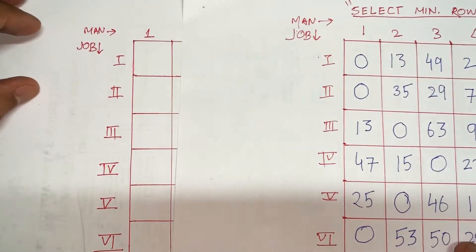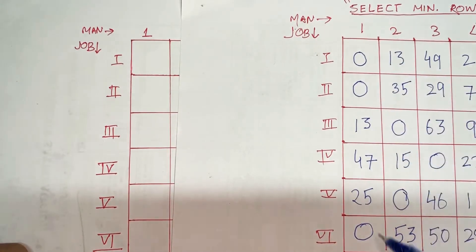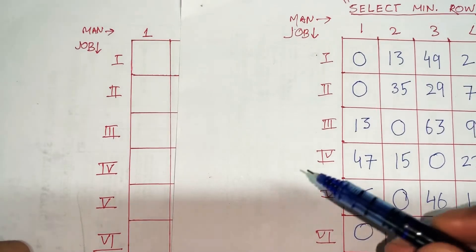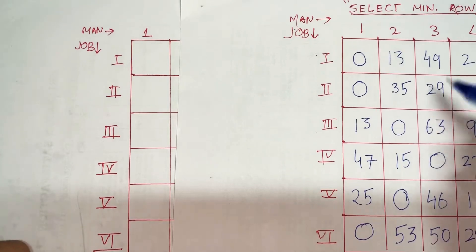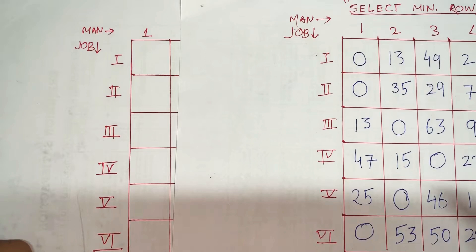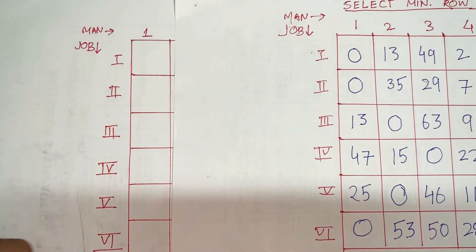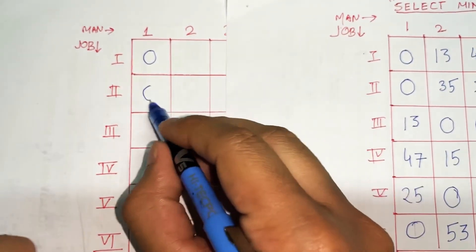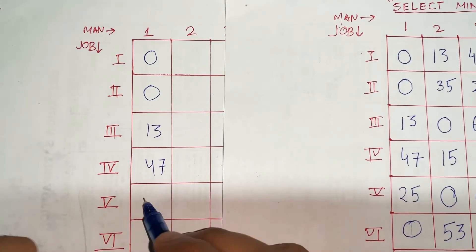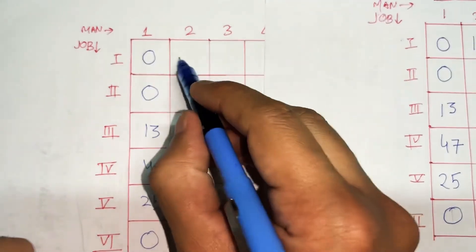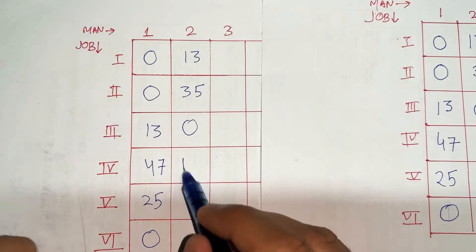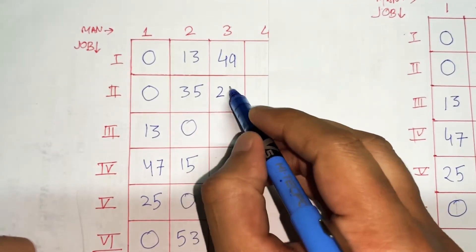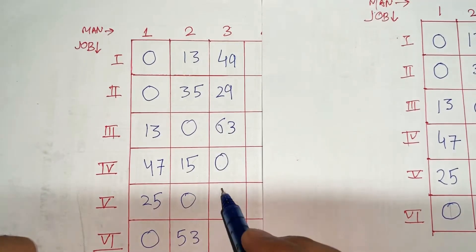In the first column, the minimum is 0, so subtracting 0 changes nothing. The same applies to the first three columns — since the minimum element is 0 in each, they remain absolutely the same. So I am just going to replicate them: 0, 0, 13, 47, 25, 0 for column 1; 13, 35, 0, 15, 0, 53 for column 2; and 49, 29, 63, 0, 46, 50 for column 3.